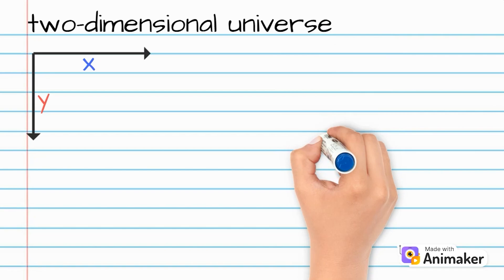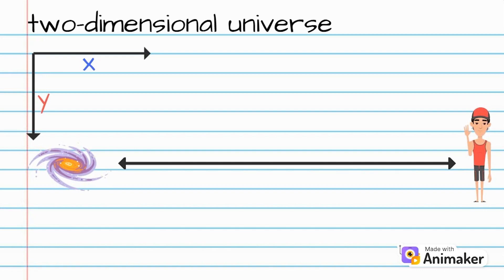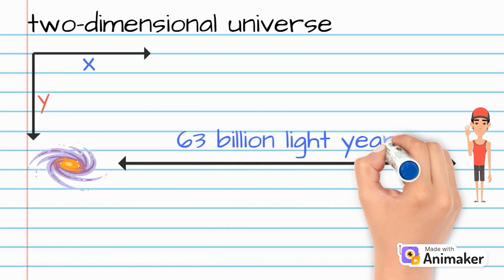Consider this two-dimensional sheet of paper in which the entire universe is built in its two-dimensional space. Consider Alex standing on the right side of the paper, and a distant galaxy called the Blue Galaxy, 60 billion light years away, is on the left side of the paper.